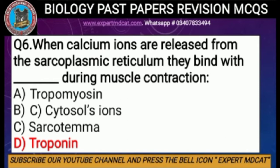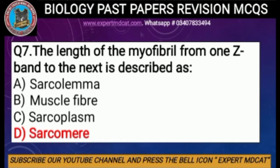Question number six: when calcium ions are released from the sarcoplasmic reticulum, they bind with dash during muscle contraction — options are tropomyosin, cytosol, sarcolemma, or troponin. The correct option is D, troponin, because troponin is the binding site for calcium, actin, and tropomyosin during muscle contraction.